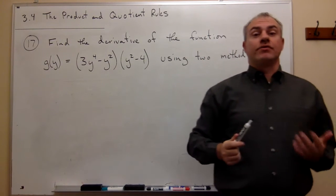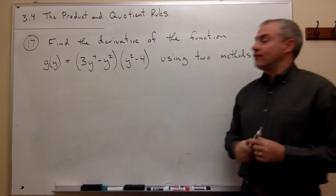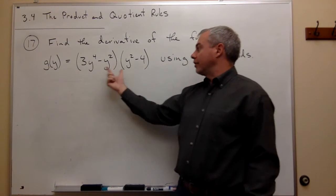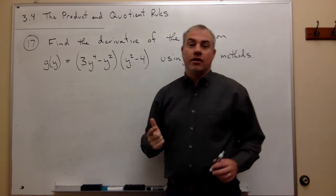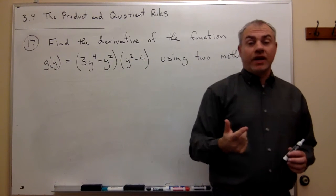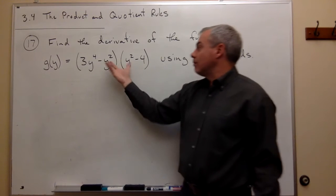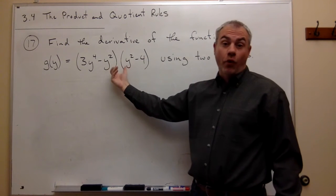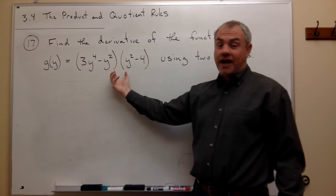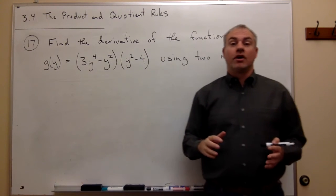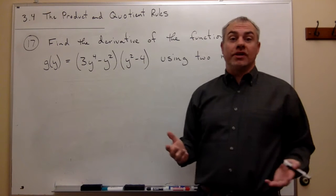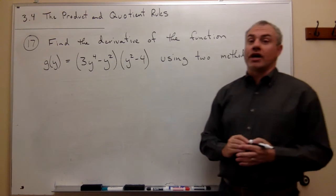And what do I mean by using two different methods? Well, first of all, I want to use the product rule because these are two functions multiplied together to take the derivative. And then secondly, I could just multiply this out or use FOIL to multiply this out and then take the derivative and not use the product rule. Both of those ways are equally good and both of them will get you the right answer.